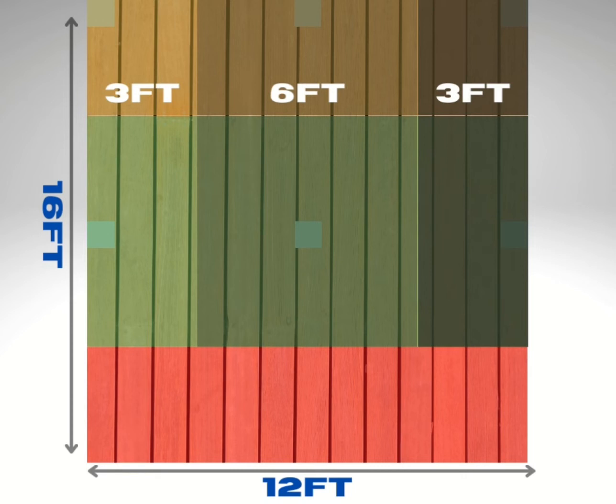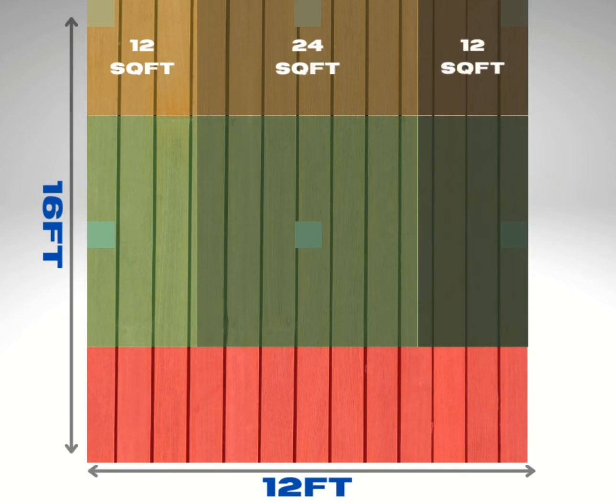Now that we have all of our measurements, we can start calculating. Three times four is 12 square feet, six times four is 24 square feet, and three times four is 12 square feet.